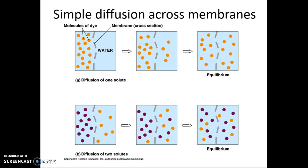Diffusion is the motion of molecules from an area of high concentration to an area of low concentration. The molecules move both ways, but more molecules move from high to low concentration because there are simply more molecules to move that way. Temperature also affects the speed of diffusion — warmer molecules move faster and therefore diffuse faster.